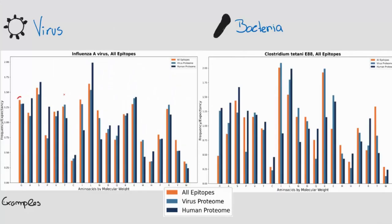To answer this question, we analyzed the amino acid frequencies of the epitopes of viruses and bacteria and compared those frequencies with the ones found in the human proteome, organizing the results by amino acid molecular weight.